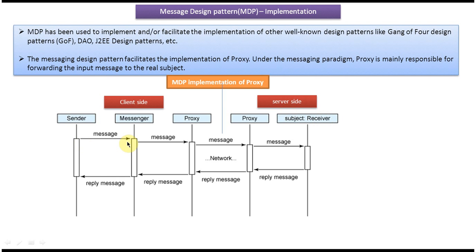We have seen what is a messenger in the message design pattern introduction. The messenger will forward the message to the client side proxy. The main responsibility of the client side proxy is to forward the input message to the real subject. In this case the real subject is the receiver. So this client side proxy will just forward this message to the server side proxy, and then the server side proxy will forward that message to the receiver.